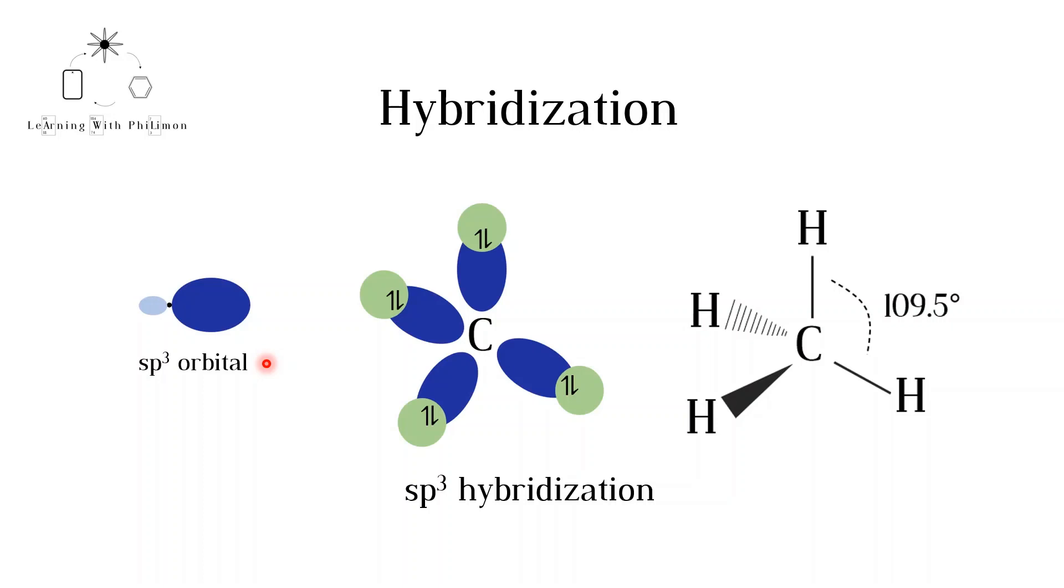The sp3 hybrid orbitals produced have a larger lobe, like in a p orbital, where the electron is more likely to be found, and a smaller lobe. Note that the dot in the center denotes the nucleus. In this diagram we can see that the sp3 hybrid orbitals are arranged at 109.5 degrees from each other, just like in the Lewis diagram.